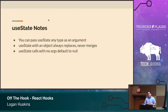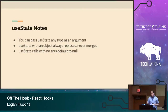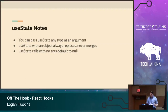A couple of notes about useState: you can pass useState any type as an argument — an empty string, a number, an array, an object, or nothing which defaults to null. But be careful: useState with an object always replaces and never merges. When you call this.setState in a class component it merges your old state with your new state. useState replaces the entire object. Because of that, it's typically recommended to call multiple useStates for different pieces of state — one for message, one for color, and so on. useState with no args defaults to null.